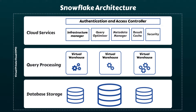Snowflake's architecture consists of three key layers: database storage, query processing, and cloud services. When data is loaded into Snowflake, it is reorganized into its proprietary optimized columnar format and stored in cloud storage services such as AWS S3, Azure Blob Storage, or Google Cloud Storage, depending on the cloud chosen during account setup. Snowflake takes full responsibility for managing data storage, including partitioning and compression. These data objects are not directly accessible to customers; they are accessed only through SQL query operations. SQL query execution occurs in the processing layer, which utilizes virtual warehouses — each representing an MPP compute cluster provisioned from the selected cloud provider.